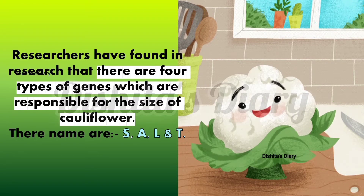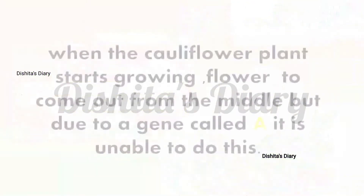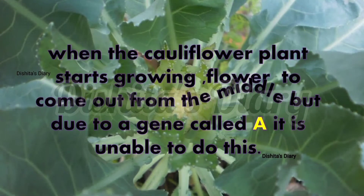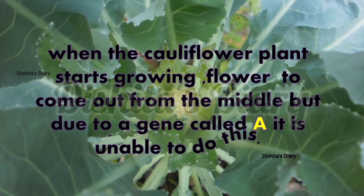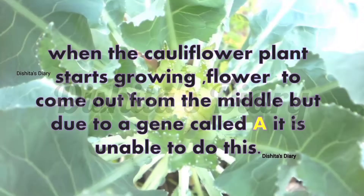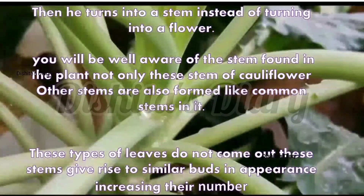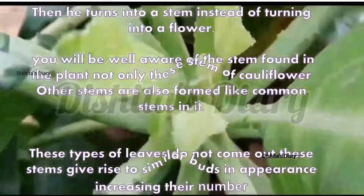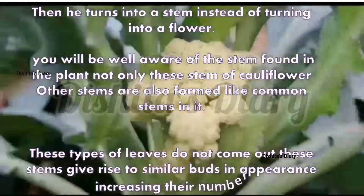If you want to remember it easily, you can just remember SALNT — S-A-L-N-T. When the cauliflower plant starts growing, a flower tries to come out from the middle, but due to a gene called A, it is unable to do this. Then it turns into a stem instead of turning into a flower.